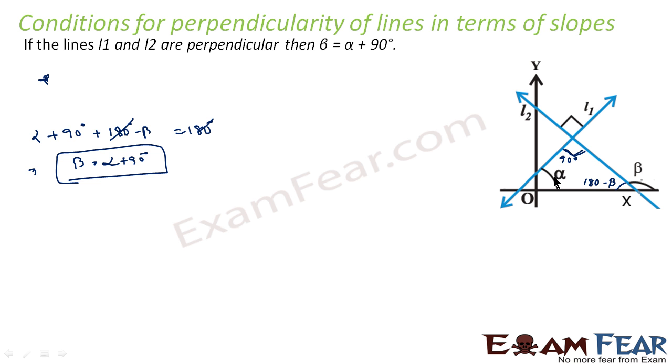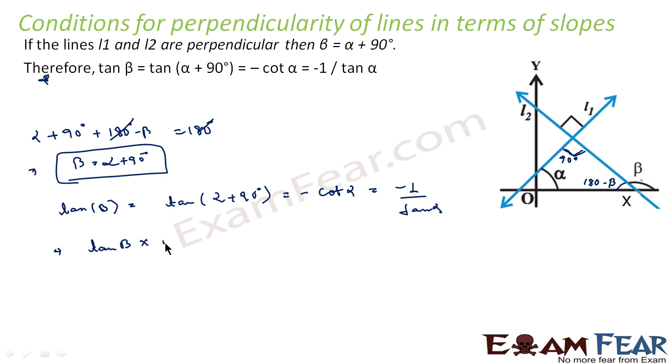Now, since β equals 90 plus α, we can say tan both sides. So we can say tan β equals tan of (α plus 90 degrees). That's what we have done here. And tan (α plus 90 degrees) is equal to nothing but minus cot α. And that is nothing but minus 1 by tan α. So tan β equals minus 1 by tan α.